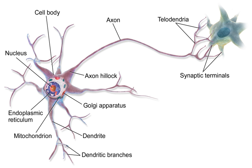The myelin sheath in peripheral nerves normally runs along the axon in sections about 1 mm long, punctuated by unsheathed nodes of Ranvier, which contain a high density of voltage-gated ion channels. Multiple sclerosis is a neurological disorder that results from demyelination of axons in the central nervous system. Some neurons do not generate action potentials, but instead generate a graded electrical signal, which in turn causes graded neurotransmitter release. Such non-spiking neurons tend to be sensory neurons or interneurons, because they cannot carry signals long distances.